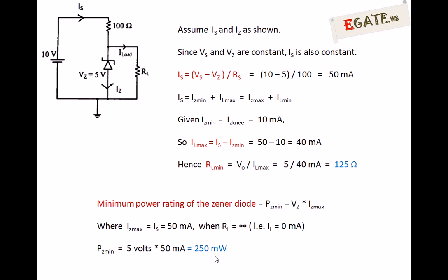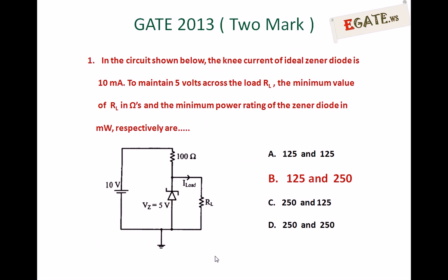So the minimum RL required is 125 ohms and minimum power rating is 250 milliwatts. The correct answer for the given question is B: 125 and 250.